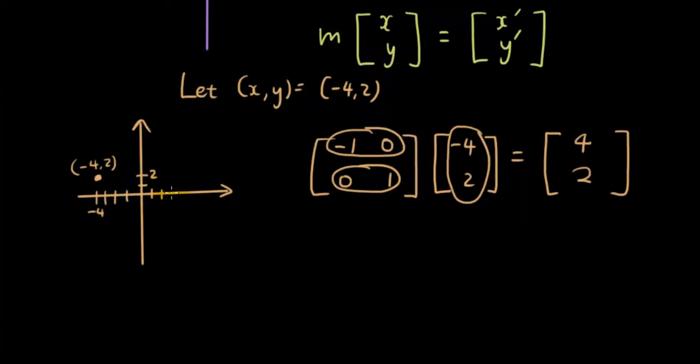And let's draw the image. We have x is 4 and y is 2, so it's over here. Indeed it has been reflected in the y axis.